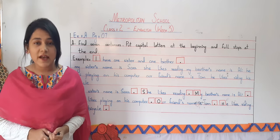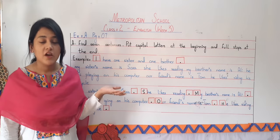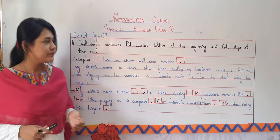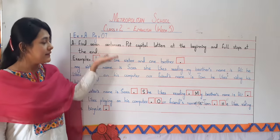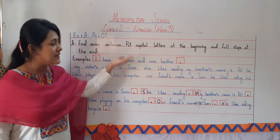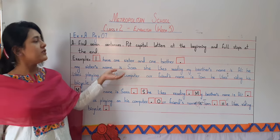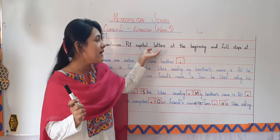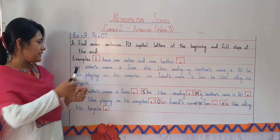After doing the book exercise, now it's time for us to start our grammar exercise. So my dear students, take out your grammar copies and open up the page. We are going to do exercise A of page number 7. In this exercise, we first have to find 7 sentences from this paragraph, write capital letters at the beginning of each sentence, and mark a full stop at the end.